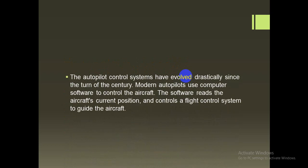The autopilot control system has evolved drastically since the turn of the century. Modern autopilots use computer software to control the aircraft, and this software manages the aircraft's position and control systems. We basically added stability control, GPS, and more, making it more suitable and more reliable. This has really significantly reduced the pilot workload.